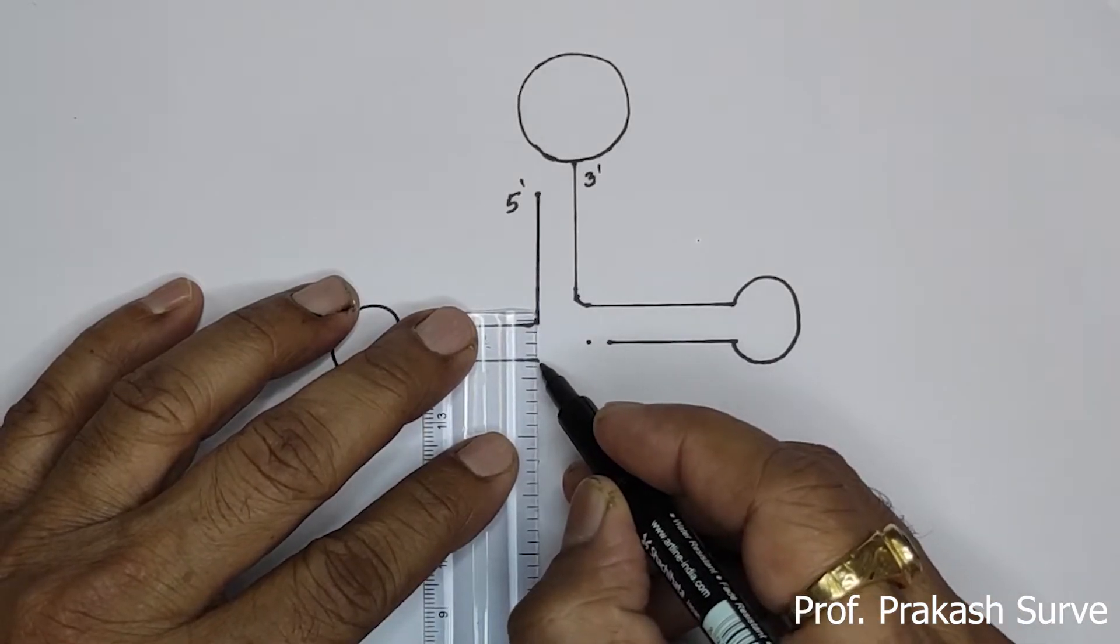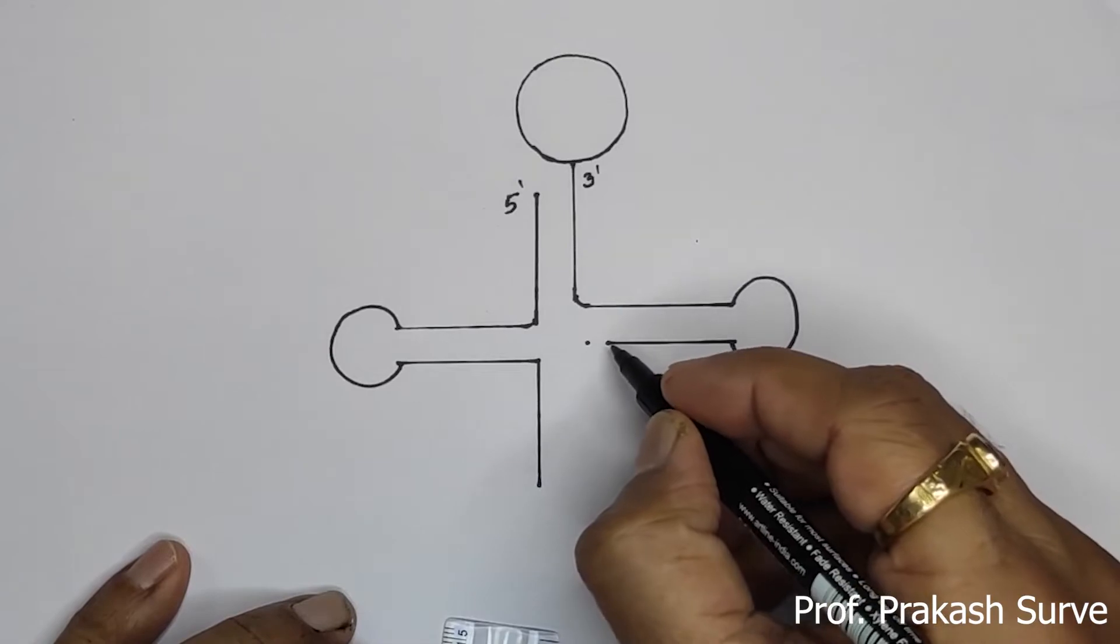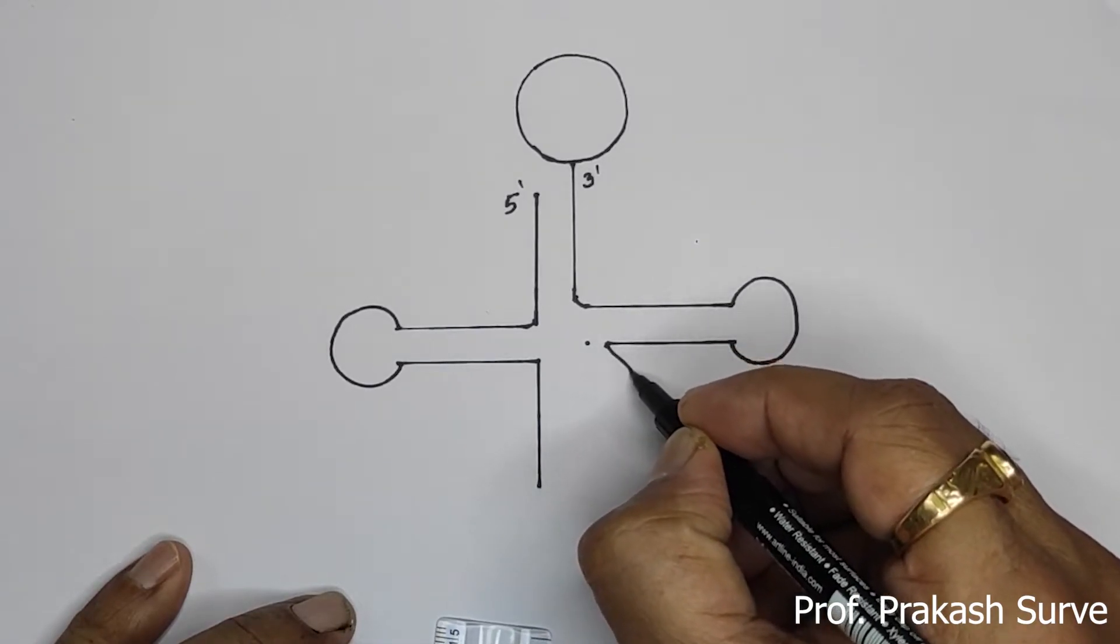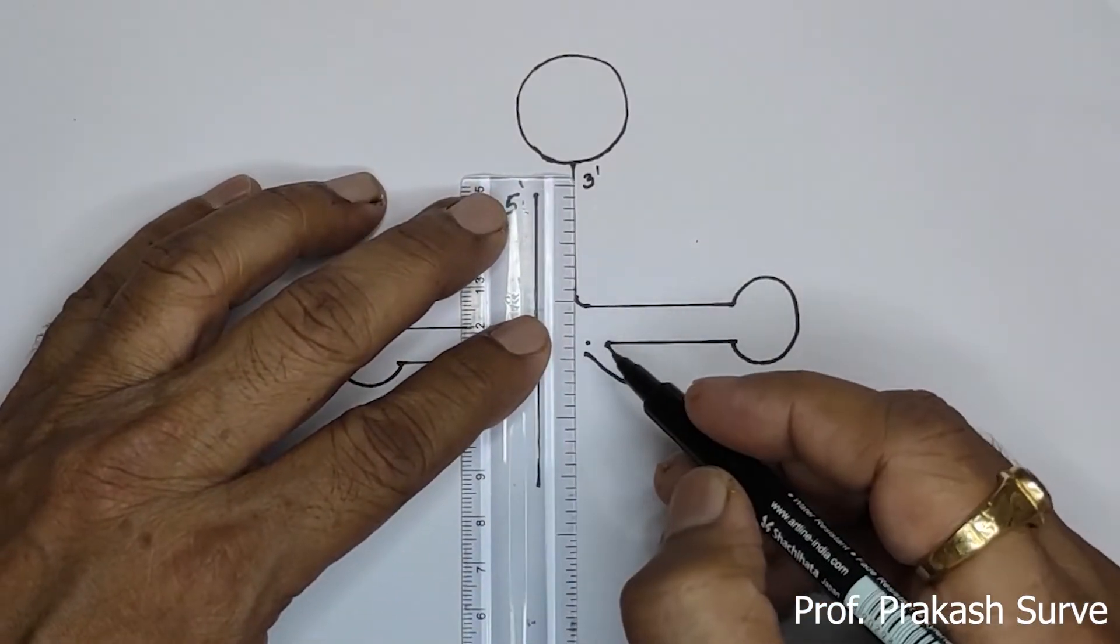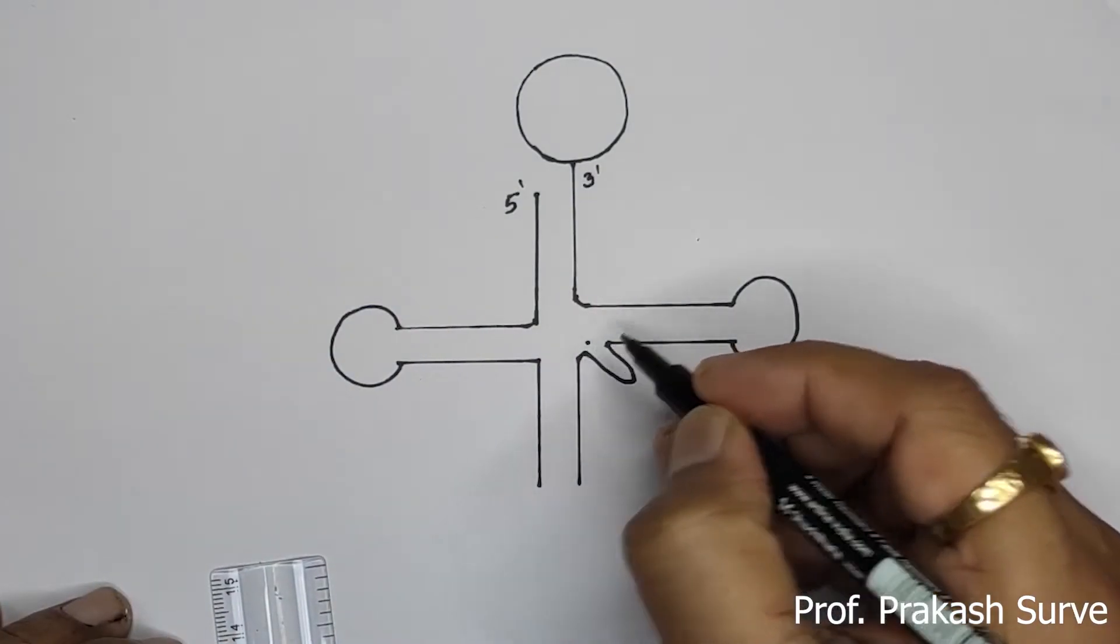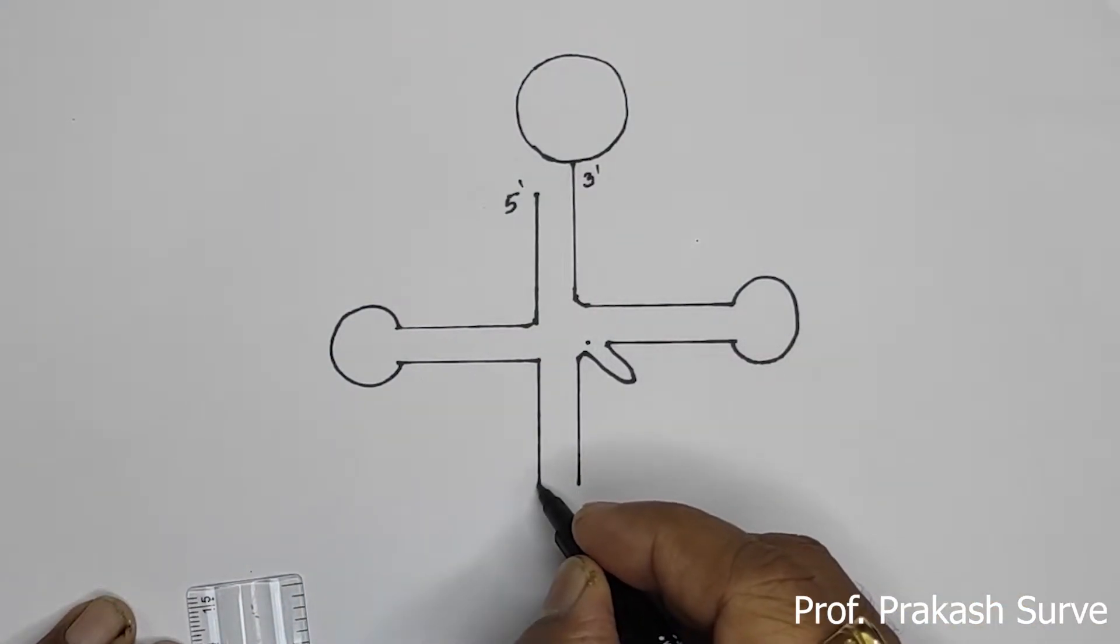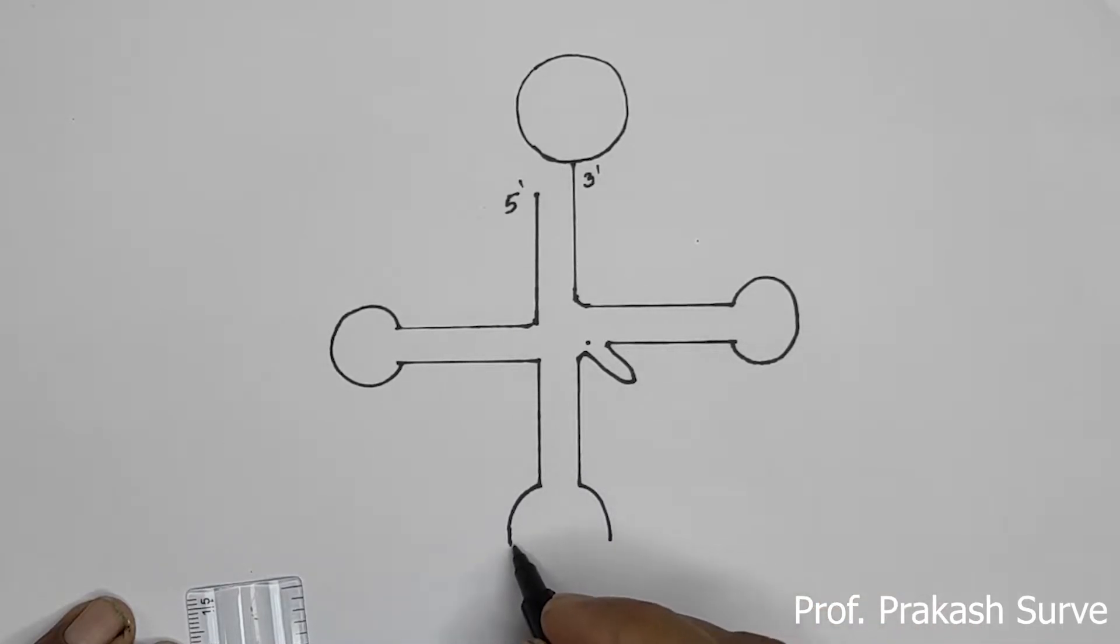Now this will continue downward. Here we have to draw one variable loop. Now this will continue down. Join this here. Now here we will draw the anti-codon loop. So this one you got the anti-codon loop.